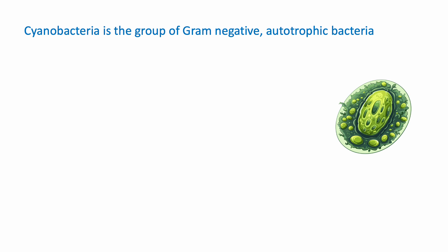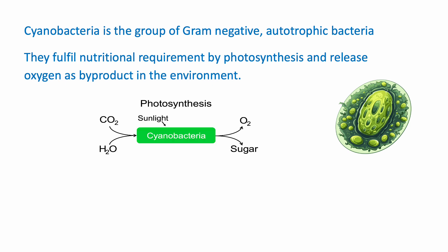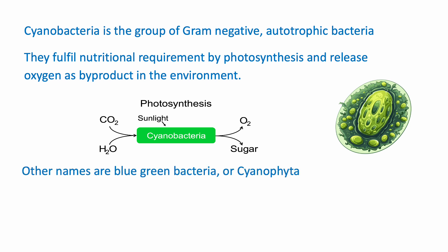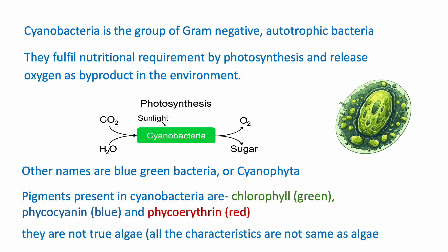Cyanobacteria is a group of gram negative autotrophic bacteria with the ability of photosynthesis, meaning they fulfill their nutritional requirements through photosynthesis and release oxygen as a byproduct. Other names are blue green bacteria or cyanophyta. They contain chlorophyll a, which gives a green color, plus accessory pigments phycocyanin (blue) and phycoerythrin (red), resulting in a blue-green appearance — which is why they are called blue green algae, though they are not true algae.